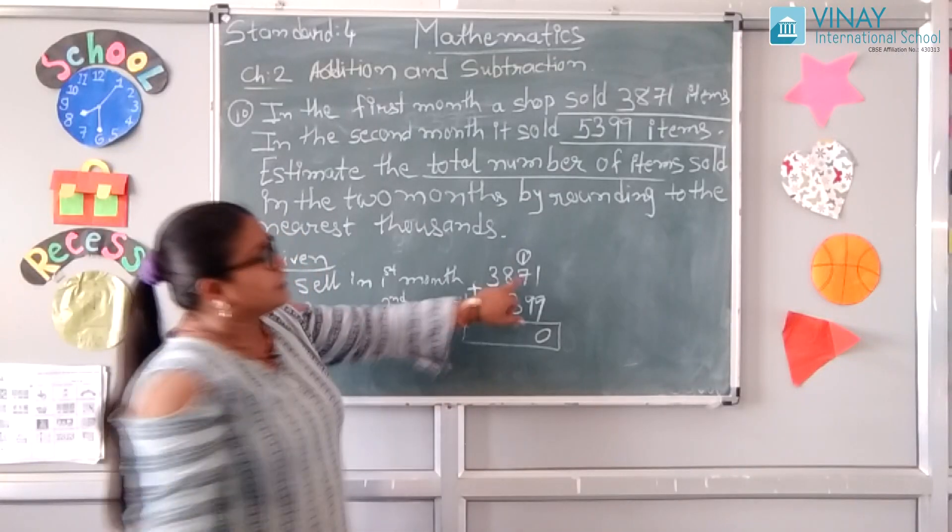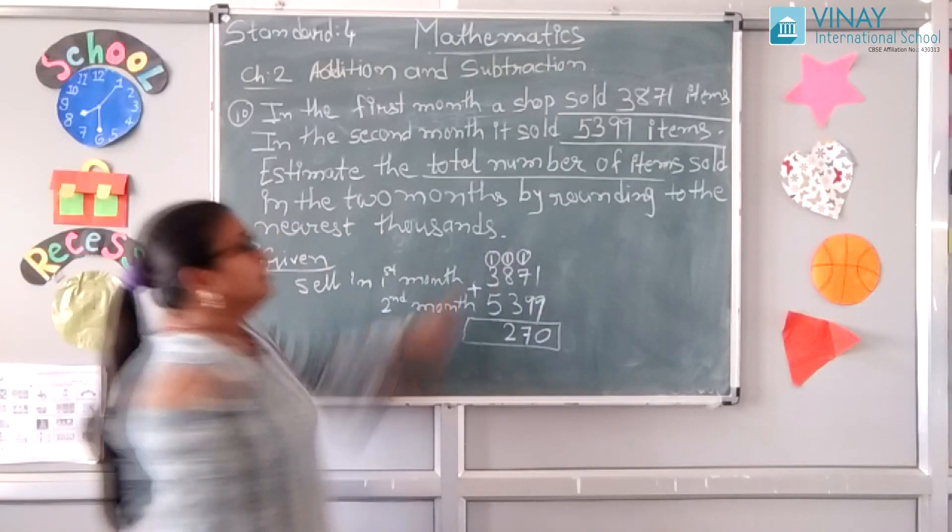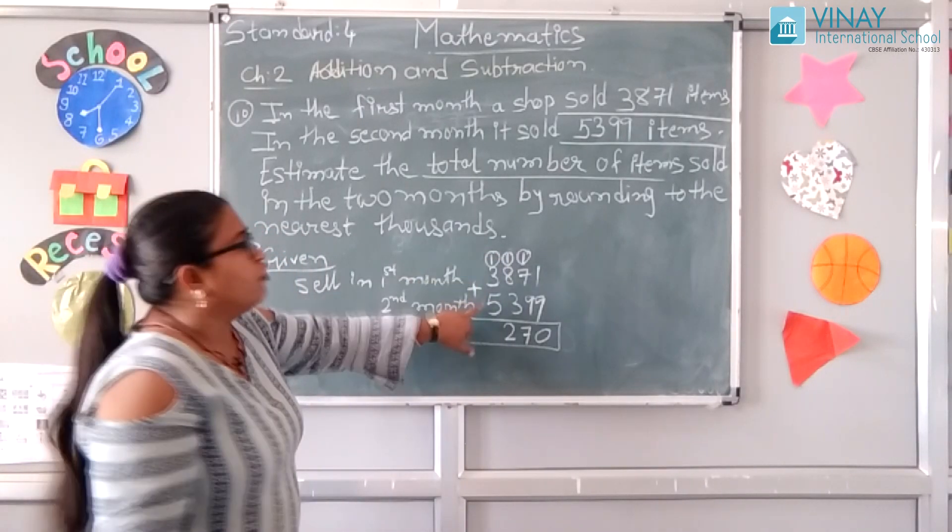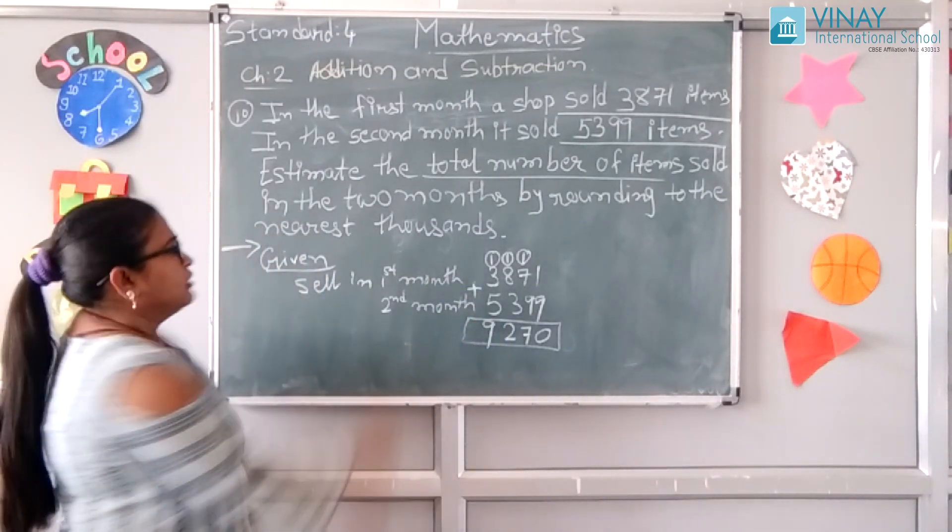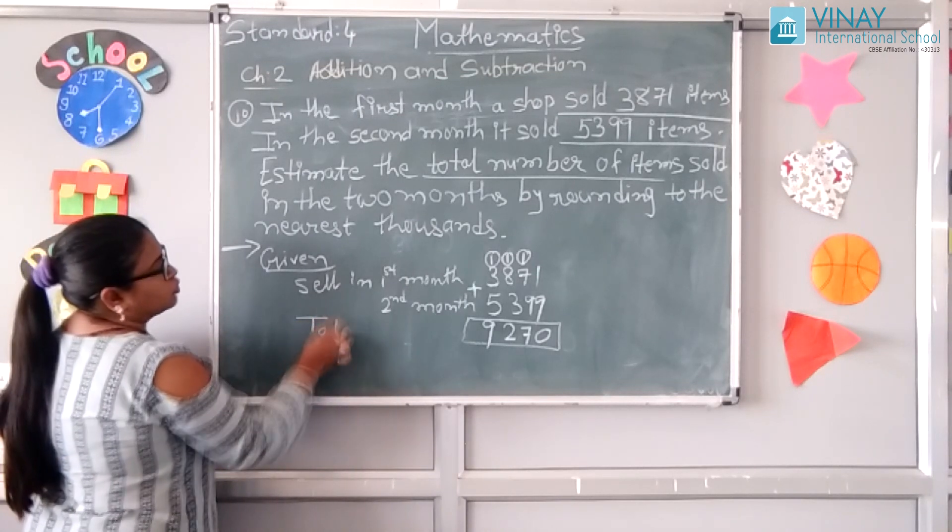9 plus 1 is 10, 0, 1 carry over. 7 plus 8 plus 9 is 70. 8 plus 1 is 70, 12, 1 carry over. 3 plus 1 is 4, 4 plus 5 is 9.